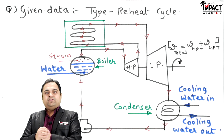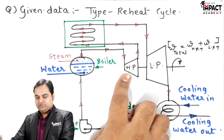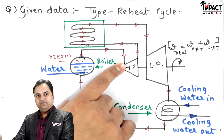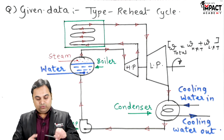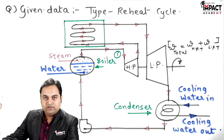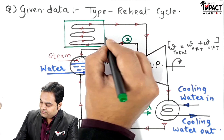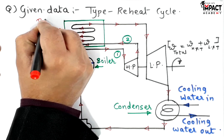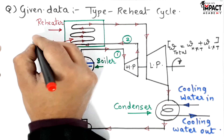Here is the diagram of a simple reheat cycle. Basically we have two turbines — one is the HP turbine (high-pressure turbine) and the other is a low pressure turbine. Steam coming out from the boiler goes into the HP turbine first, where it gets expanded and then leaves the turbine. When steam is entering the high pressure turbine that is point number one, and when it is leaving that is point number two. At point two it enters a device called the reheater.